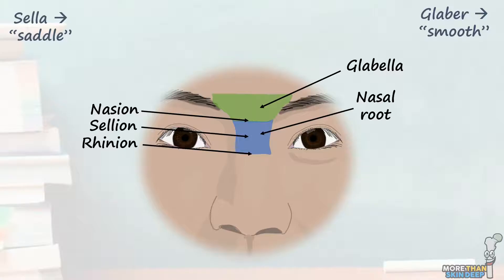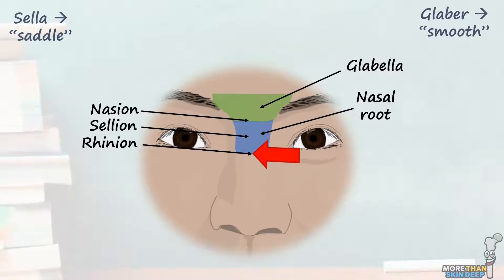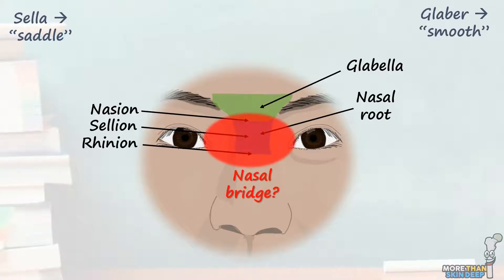The rhinion is the lowest midline part of the nasal root, where the bony part of the nose ends and the cartilaginous part begins. Now move your finger downwards from the glabella and see if you can identify the regions we've just talked about. You might see the term nasal bridge to describe this approximate region, but nasal root is a little more clear as to what you're describing.